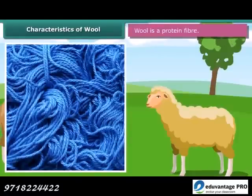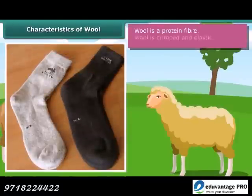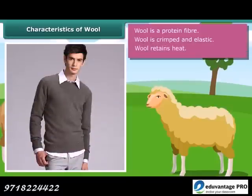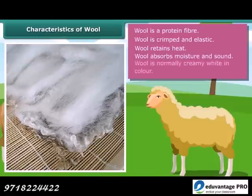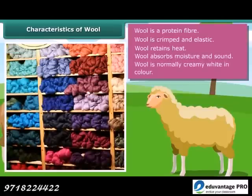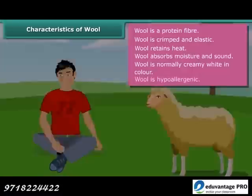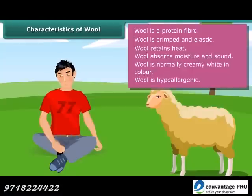Wool is a protein fiber. It is crimped and elastic. Crimp makes wool bulky and helps it retain heat. Wool absorbs moisture and sound because it is hollow. Wool is normally creamy white in color, but it can also be black, brown, or silver. Wool is hypoallergenic — in other words, it causes fewer allergies in human beings.